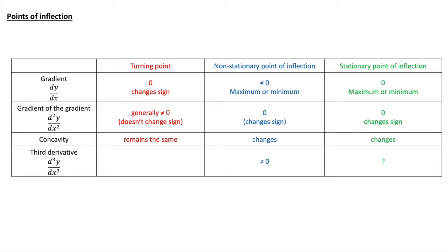For a stationary point of inflection, the gradient is zero and is at a maximum or minimum. The second derivative is also zero and it's changing sign. So for a stationary point of inflection, the second derivative is changing sign, whereas for a turning point, the second derivative is not changing sign. We'll look at that on the next slide.